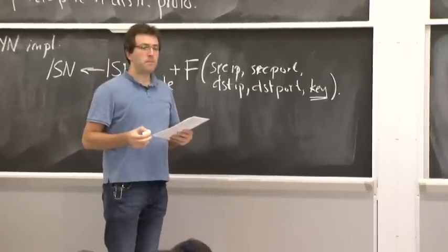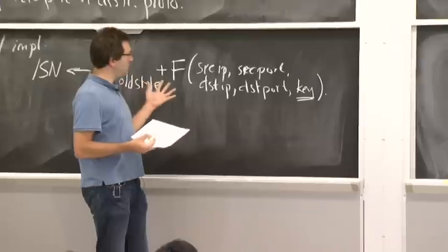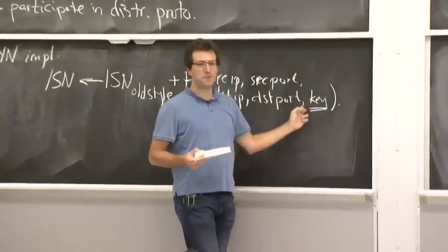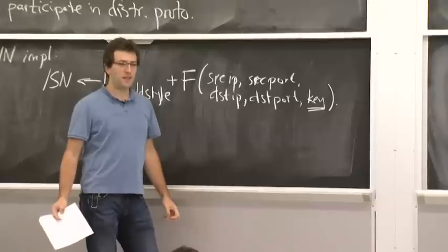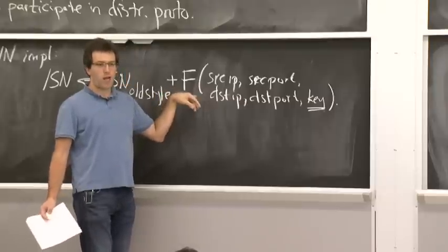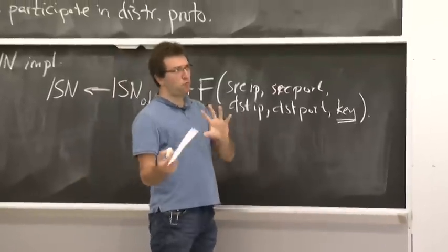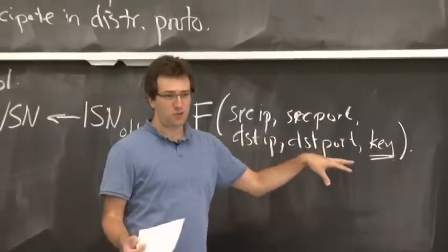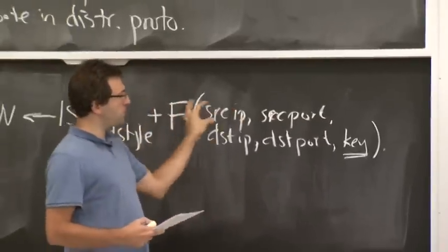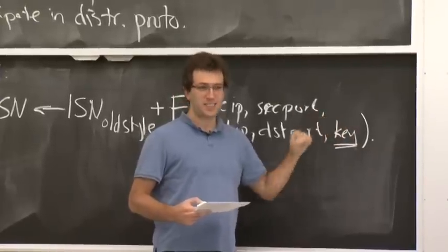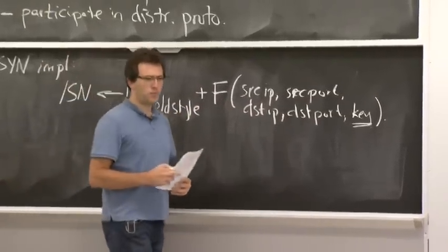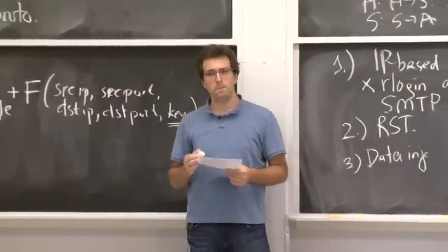The key is important because without it, you could connect to the server, compute the same function f, subtract it out, compute f for the connection you want to fake, and guess the initial sequence number. When your machine boots up it generates a random key; every time you reboot it generates a new key. The function f is typically something like a cryptographically secure hash function, which has the property that even given inputs and outputs except for the key, it's very difficult to guess what the key is. This hopefully makes it at least cryptographically hard in this setting.